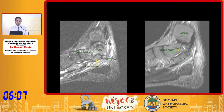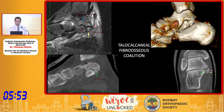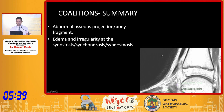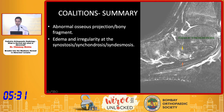This is a typical case of talocalcaneal fibro-osseous coalition. On the normal fat-suppressed sequence there is no edema at the middle subtalar joint, whereas in our case there is edema. On CT sections we see the extra osseous part — part of the coalition is fibrous and part is osseous. To summarize coalitions: any abnormal osseous projection or bony fragment as seen in the anteater sign — that's the calcaneonavicular coalition — and edema at the synchondrosis, synostosis, or syndesmosis would point towards a coalition.